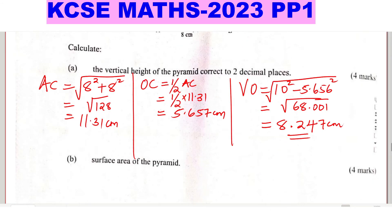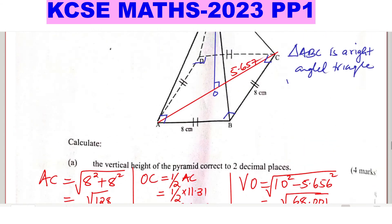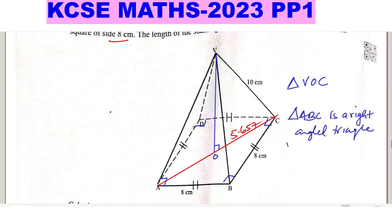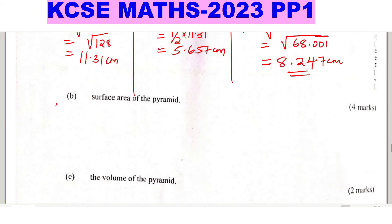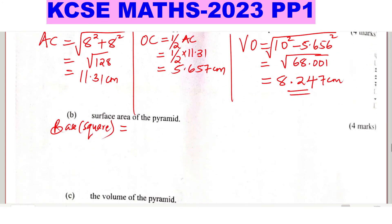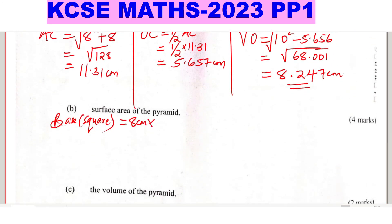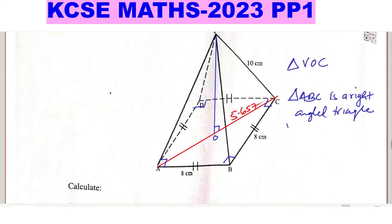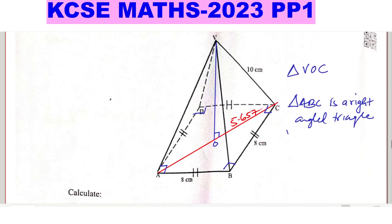Part B: the surface area of the pyramid. To get the surface area we need the area of all surfaces. Beginning with the base, which is a square: area of the base equals 8 centimeters times 8 centimeters, giving 64 centimeters squared. Then we have the slant faces — since this is a right pyramid, all the slant faces are equal, and the slant edges are 10 centimeters.